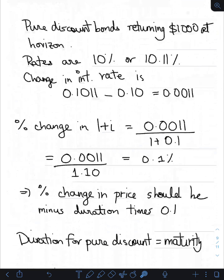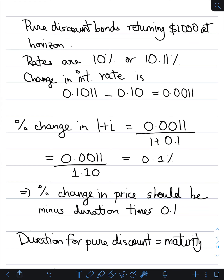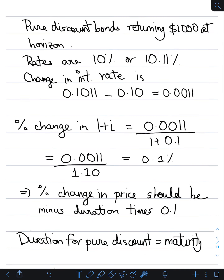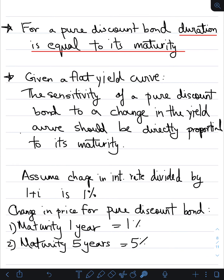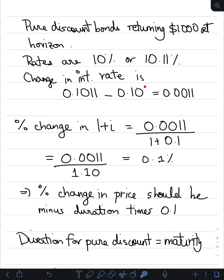Let's look at a table of numbers to explain this further. We have pure discount bonds returning one thousand dollars at the horizon, with five different maturities. Each bond returns a thousand dollars at its respective time frame. We have two interest rates — 10% and 10.11% — and we calculate the prices at those rates, shown in these two columns.